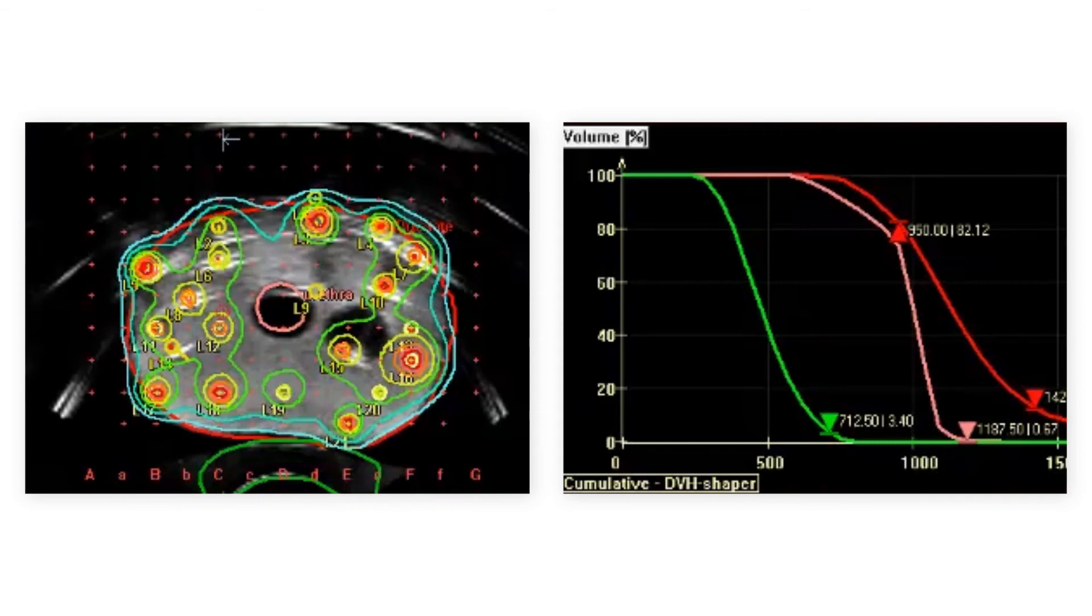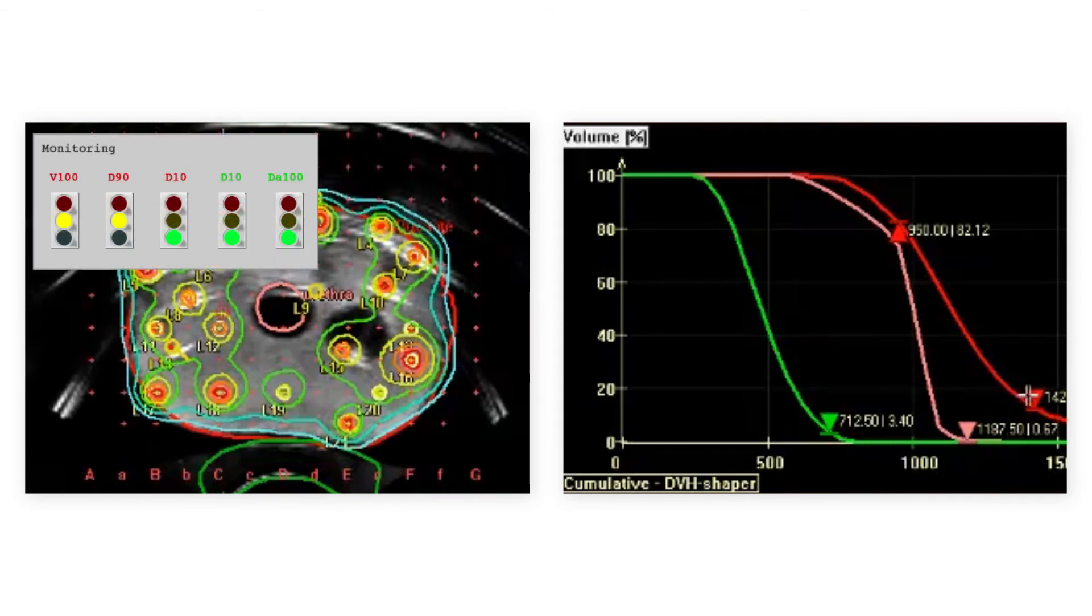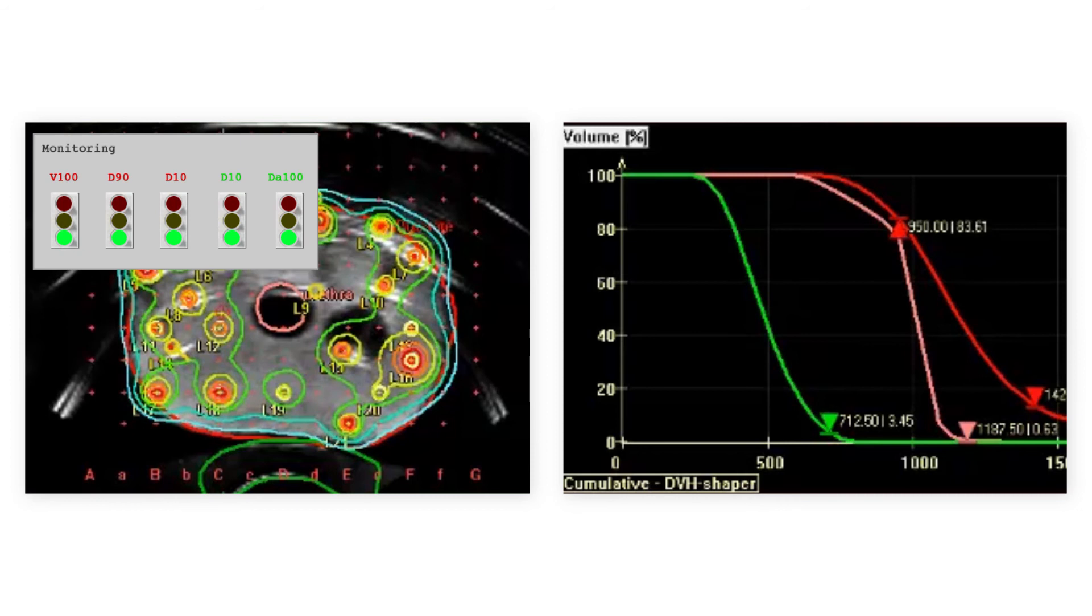The real-time prostate solution allows you to visually evaluate the treatment plan at any moment based on isodose lines, cold and hot spot location, or traffic lights. The seed or dwell positions can be adjusted and the traffic lights will again show you the result.